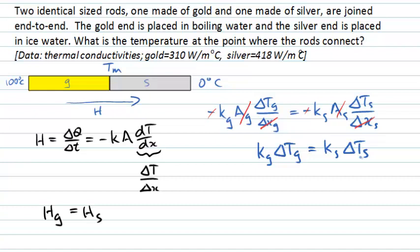We can now write down these temperature changes in terms of this temperature at the midpoint. So for gold, that change in temperature is 100 at the hot end minus the temperature in the middle. And on the silver side, it's going to be the temperature in the middle minus the cold end, which in this case is zero.